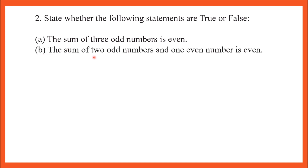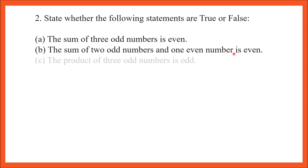Part B: the sum of 2 odd numbers and 1 even number is even. Let's check. I took 2 odd numbers: 1 and 3, and one even number: 2. 1 plus 2 plus 3 equals 6, and 6 is an even number. So this statement is true — the sum of 2 odd numbers and 1 even number is even.